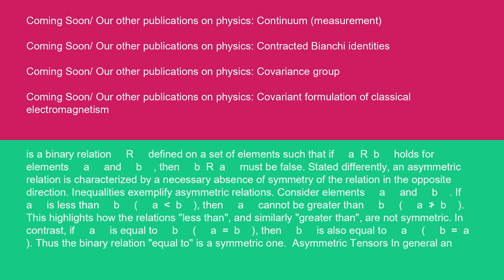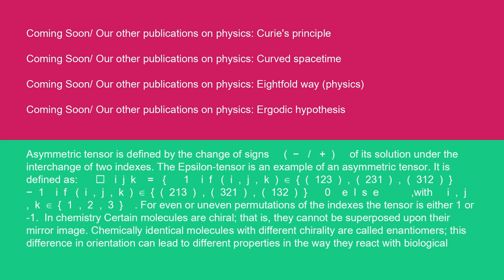Asymmetric tensors. In general, an asymmetric tensor is defined by the change of signs (minus/plus) of its solution under the interchange of two indexes. The epsilon tensor is an example of an asymmetric tensor. It is defined as epsilon_ijk equals 1 if ijk is an element of {123, 231, 312}, minus 1 if ijk is an element of the opposite permutations. For even or uneven permutations of the indexes, the tensor is either 1 or minus 1.